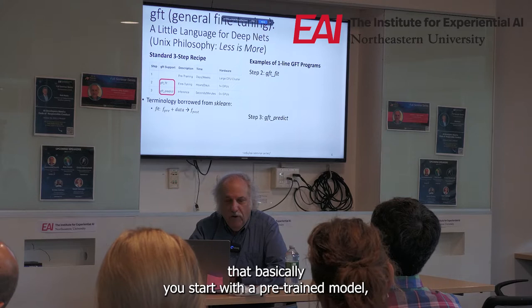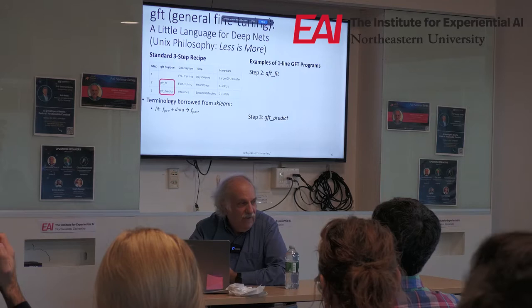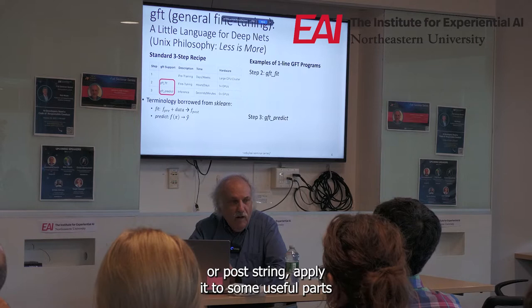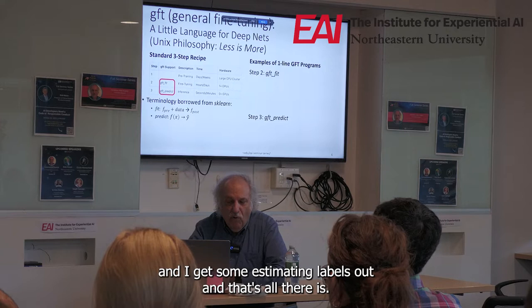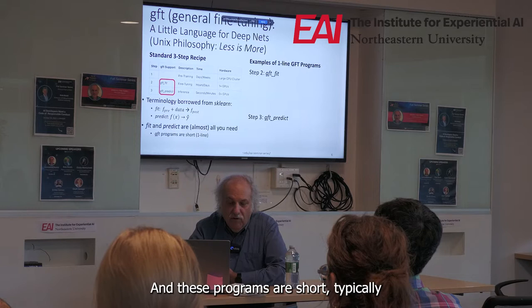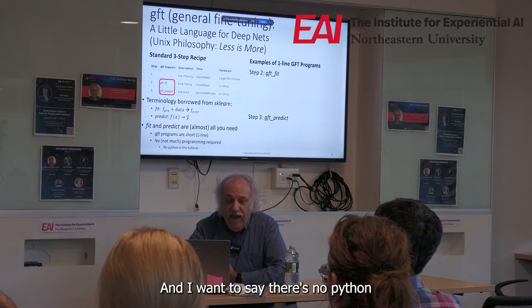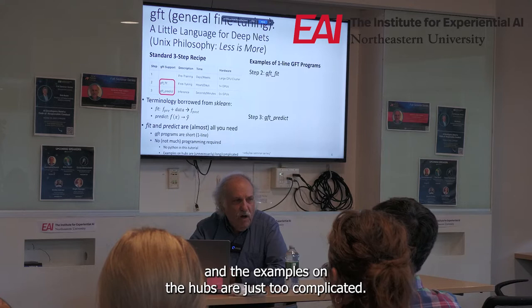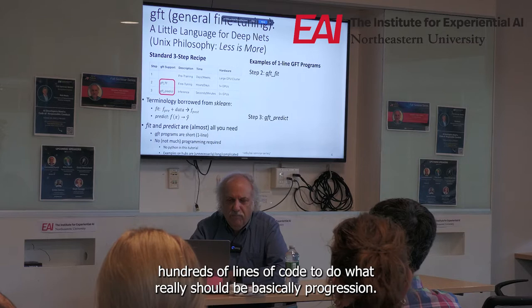Fit: you start with a pre-trained model, you add some data, and then you get a post-trained model. Predict: I take a model — it could be pre-trained or post-trained — apply it to some input x, and I get some estimated labels out. And that's all there is. These programs are short, typically one line of code, hard to even call it programming. There's no Python needed, and the examples on the hubs are just too complicated. You shouldn't need hundreds of lines of code to do what really should be basically regression.